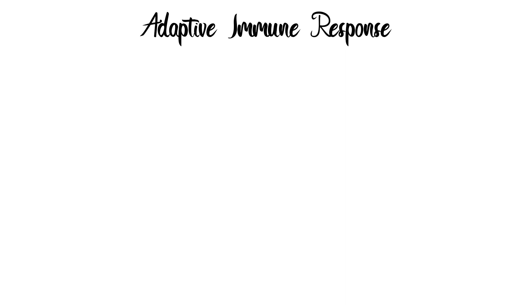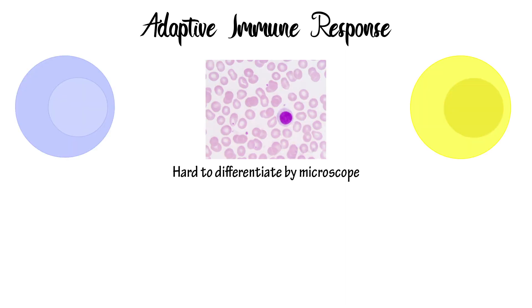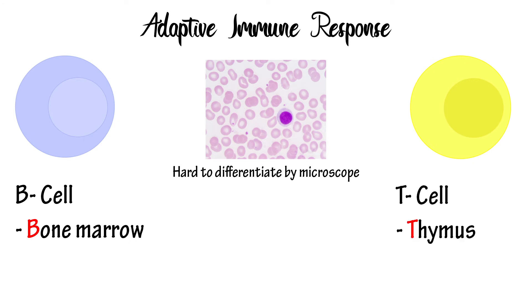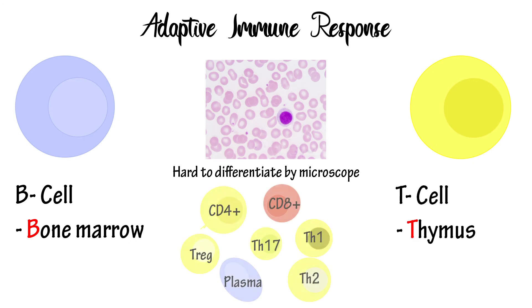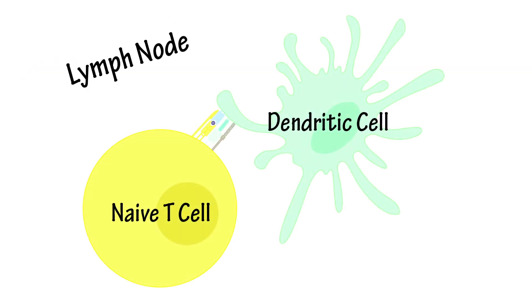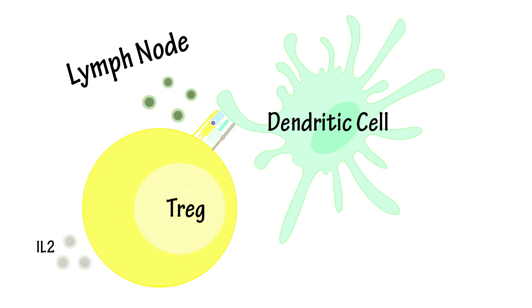If the pathogen overcomes the innate response, a more specific response is needed, and this is the adaptive response. The main cells involved are B lymphocytes and T lymphocytes. Each of these cells complete their development in key areas of the body — B is for bone marrow and T is for thymus. T cells are mainly activated by dendritic cells presenting antigens in the lymph node, another key component of the immune system. Their type is dependent on the cytokines released by those dendritic cells.